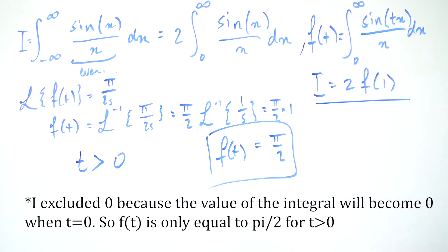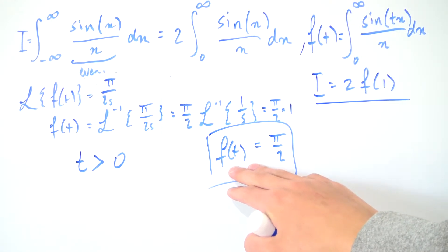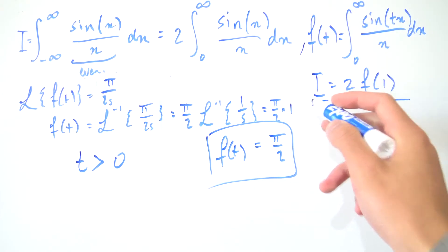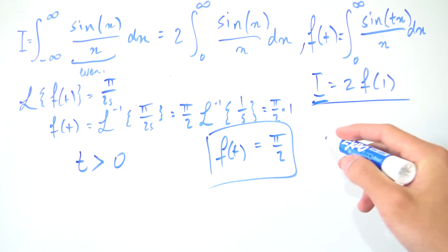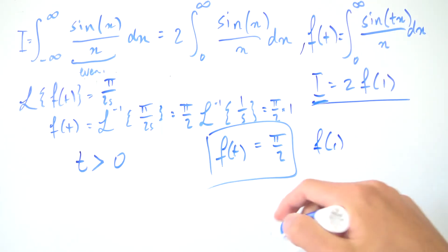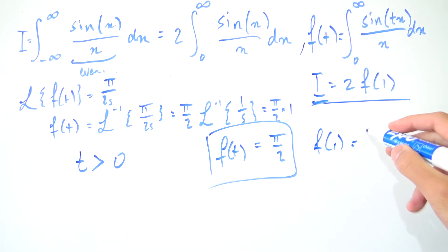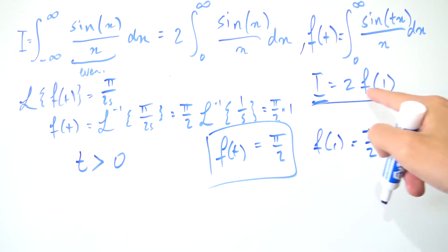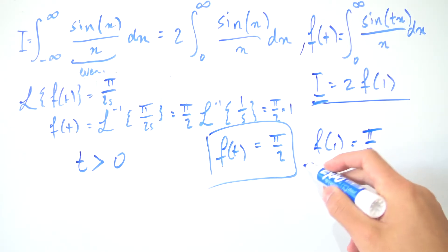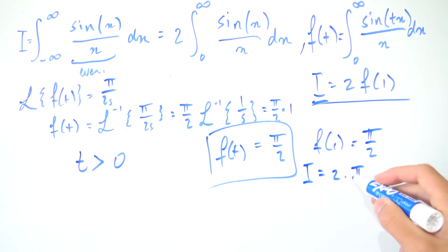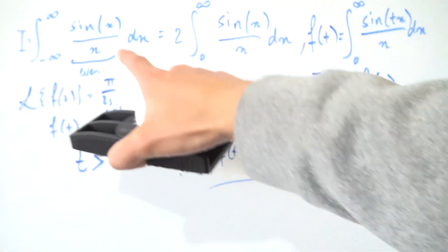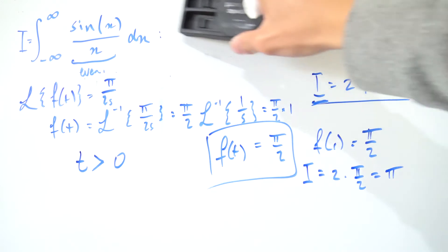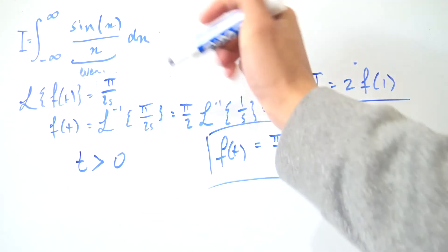Now we can solve for our original I. We established that I = 2·f(1). Since 1 > 0, f(1) = π/2. Therefore I = 2·(π/2) = π. Our original integral from negative infinity to infinity of sine(x)/x evaluates to exactly π.